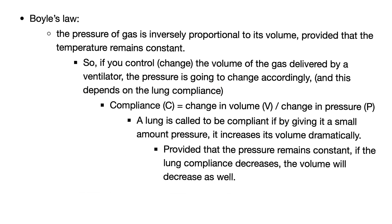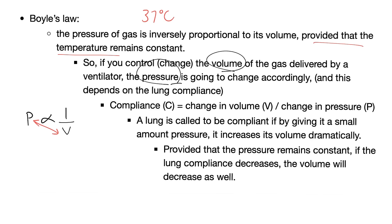Boyle's law: the pressure of a gas is inversely proportional to its volume, provided that temperature remains constant. Pressure is inversely related to volume and volume is inversely related to pressure. Because the temperature inside our body is about 37°C — constant — Boyle's law applies in your lungs. So if you control the volume of gas delivered by a ventilator, the pressure will adjust accordingly, as long as temperature stays constant and lung compliance does not change.